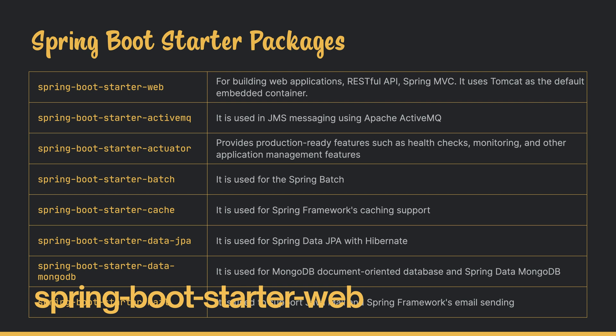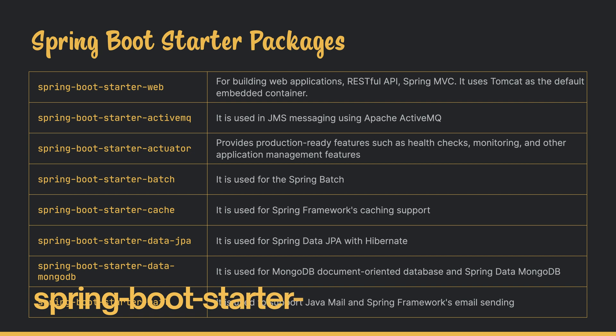Spring Boot Starter Web also comes with an embedded Tomcat server, which is the default container for running your Spring Boot application. If you want to work with JMS or ActiveMQ or if your application has a message-driven architecture, then you would need the Spring Boot Starter ActiveMQ package. The Spring Boot Starter Actuator package provides production-ready features such as health check monitoring and other application management features. Spring Boot Starter Batch is used to perform batch operations, and you also have Starter Cache for implementing cache support for your REST API, service layer, or UI layer.